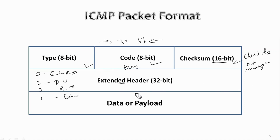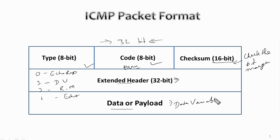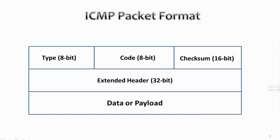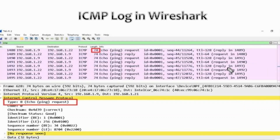The extended header is also 32 bits and is used for pointing out problems in IP messages. The data or payload is the last part of the ICMP packet and has a variable length — in IPv4 it is 576 bytes and in IPv6 it is 1280 bytes. This is a Wireshark capture of an ICMP log; you can see the ICMP type, code, checksum, length, request and reply message type, and protocol, which is how we identify an ICMP log in the wire capture.